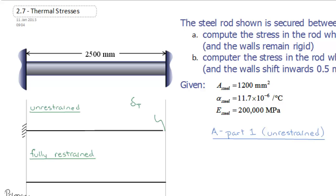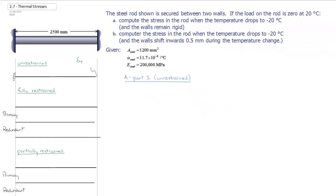For the fully unrestrained section, we know that delta T is equal to alpha delta T L.